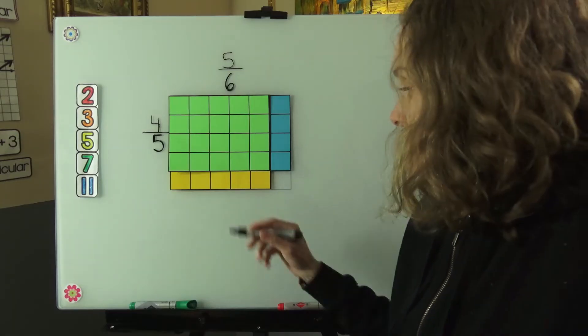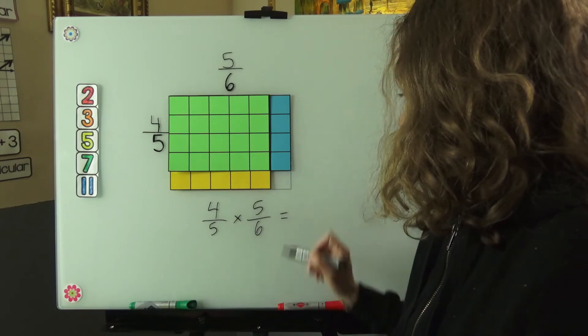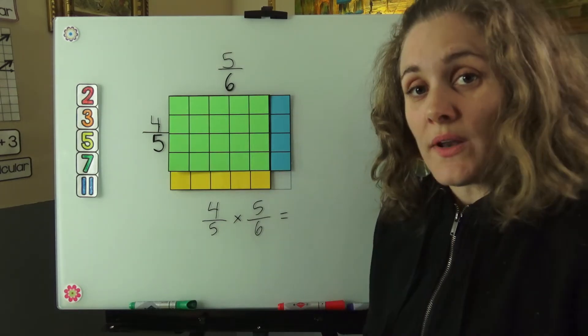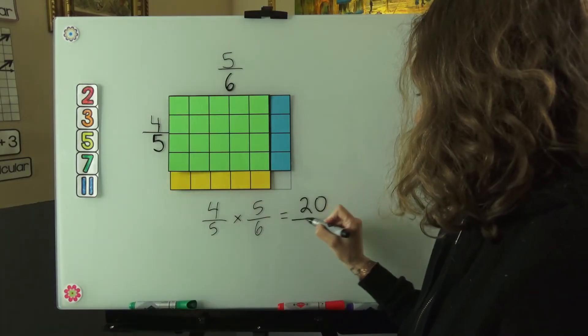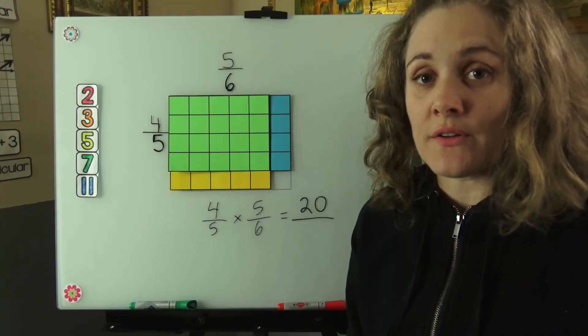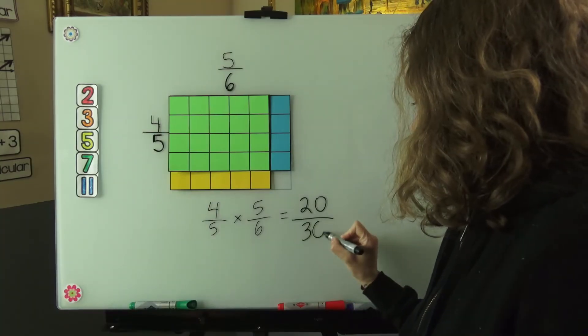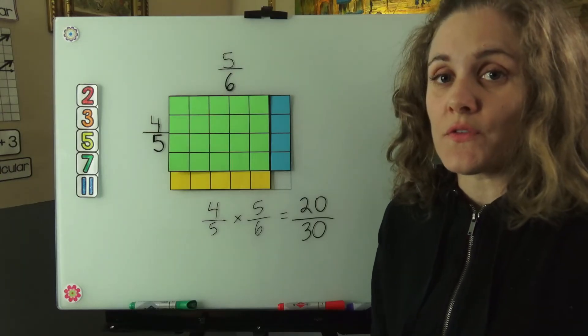And let's see what that looks like. Well, the green is 20. There's 20 boxes. 5 times 4. Out of 5 times 6 is 30, and there were 30 boxes before we started coloring any of them in. So 4 fifths times 5 sixths is 20 over 30.